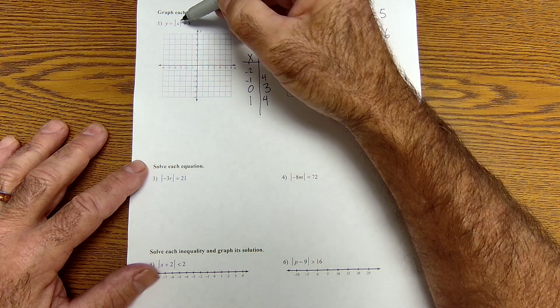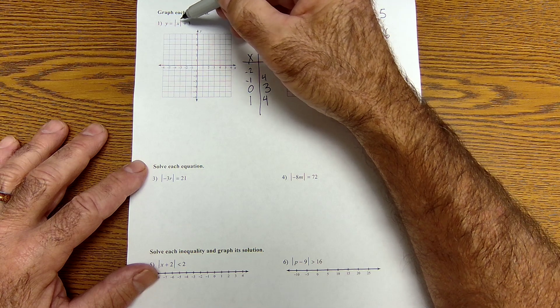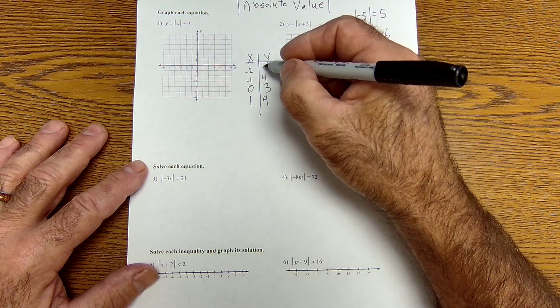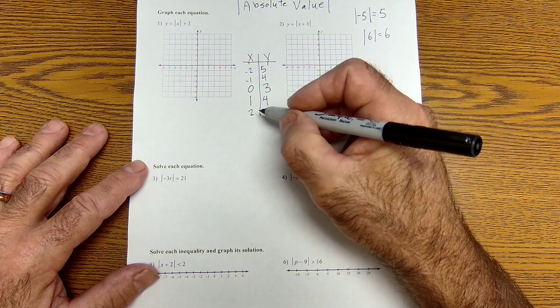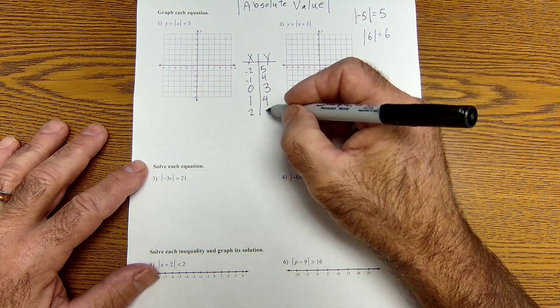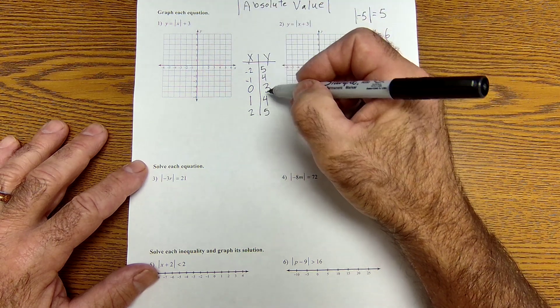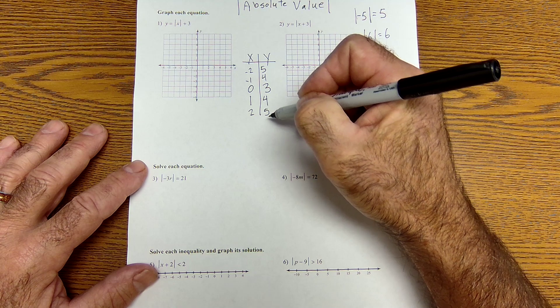And I could see a pattern here. Negative 2, negative 2, absolute value becomes positive 2. 2 plus 3 is 5. Or if I had 2, 2 plus 3 is 5. So I could see these values are repeating themselves.